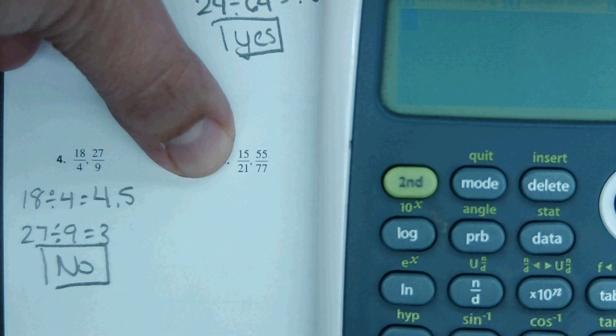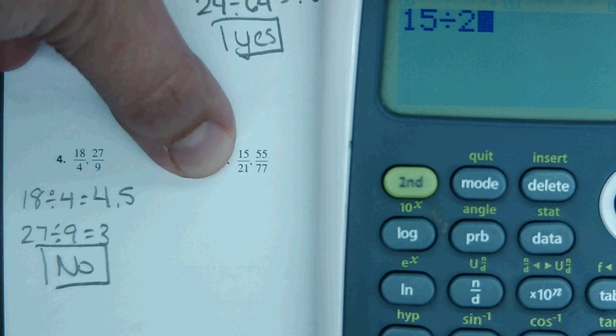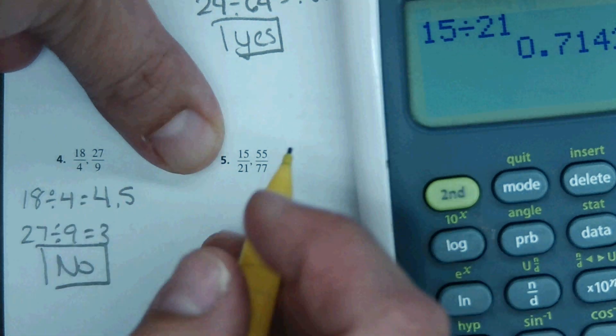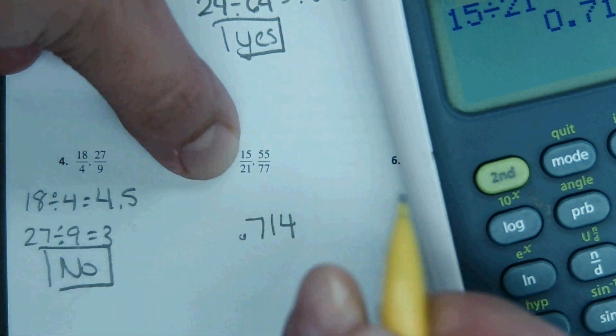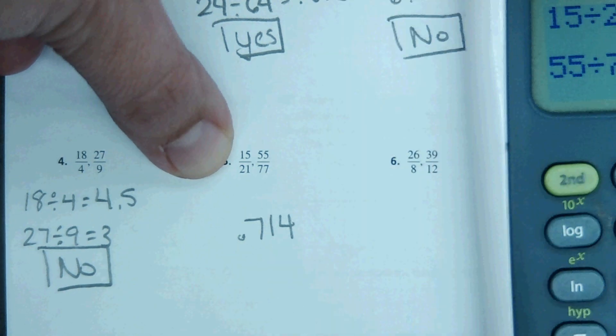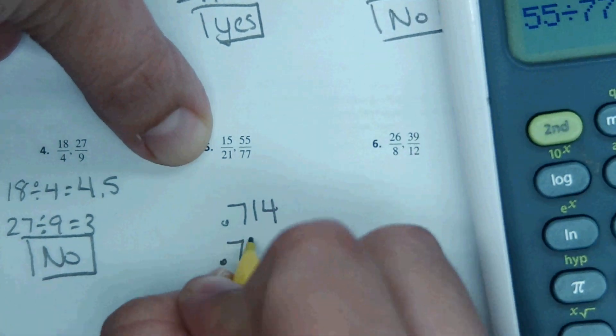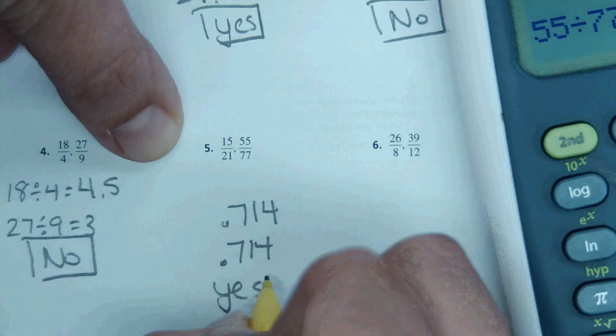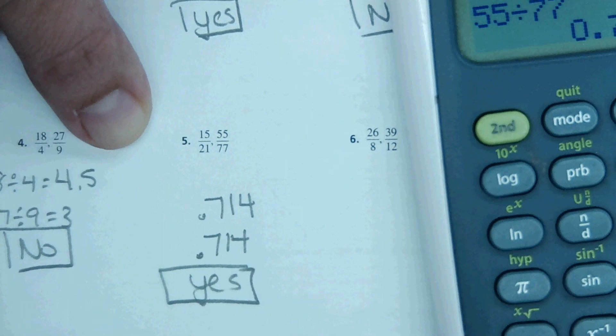At this point, we can kind of stop writing all the work here. 15 divided by 21, 0.714. 55 divided by 77 comes out to 0.714. Oh, same thing. Cool. So this one is a yes.